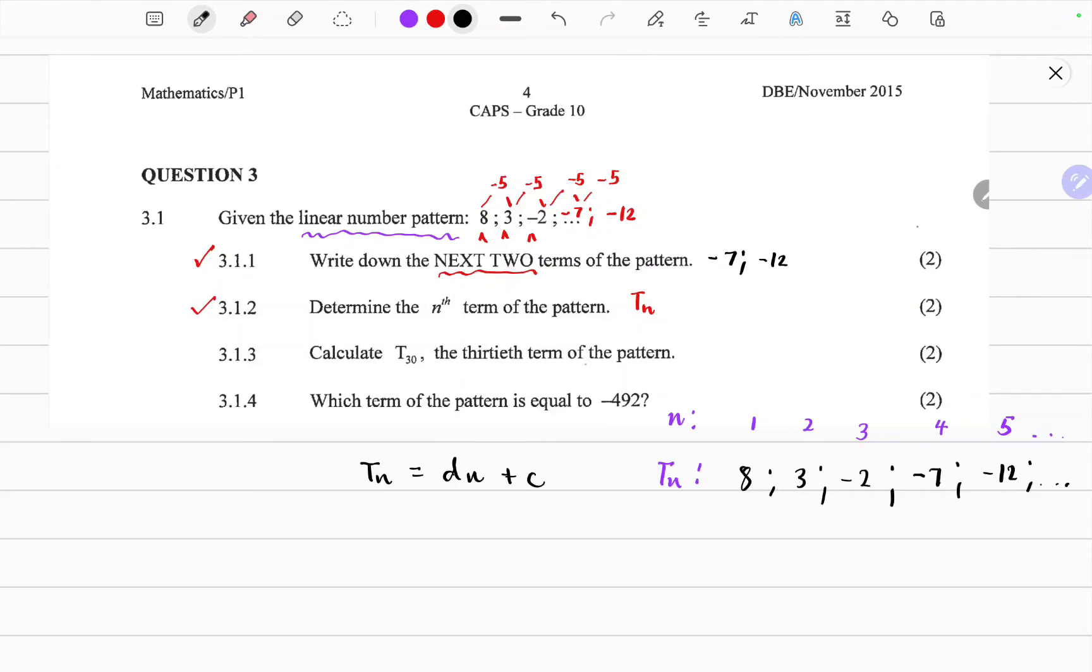So I've rewritten the numeric pattern, where n represents the position of the term, and Tn represents the term itself. So 8 would be at position 1, 3 would be position 2, and so forth. And these actually form pairs.